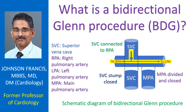The Bidirectional Glenn procedure is done for children with some types of heart diseases. In this procedure, the superior vena cava is connected to the right pulmonary artery.